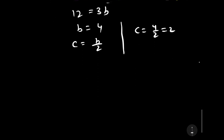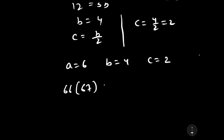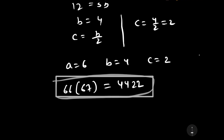Therefore, the value of a is 6, the value of b is 4, and the value of c is 2. The required two consecutive numbers are 66 into 67, which equals 4422. This is our required answer.